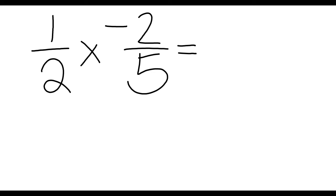Now, sometimes we're going to be multiplying and there's going to be negatives involved. So you might have 1 half times negative 2 fifths. If you multiply straight across the top, 1 times 2 is 2, and 2 times 5 is 10.